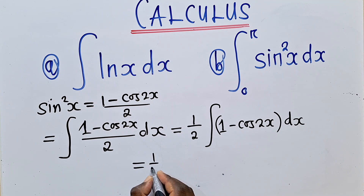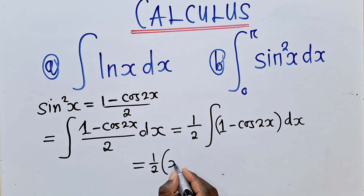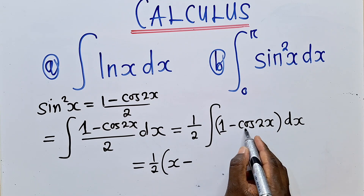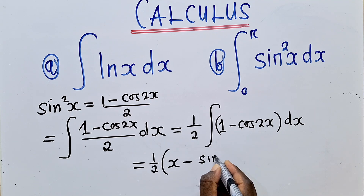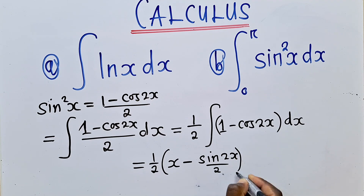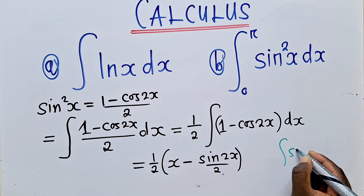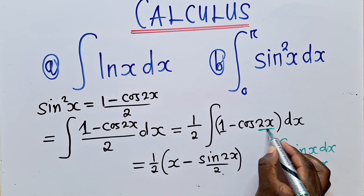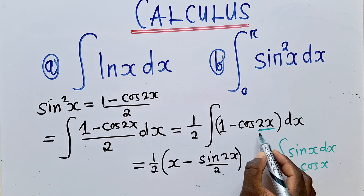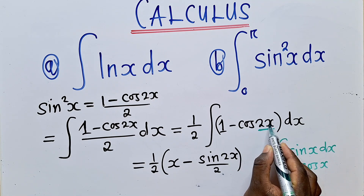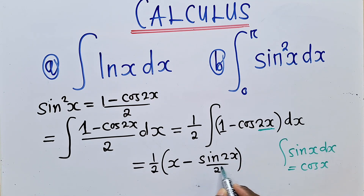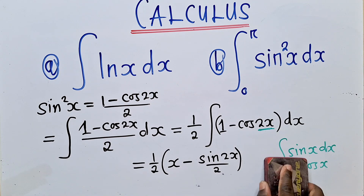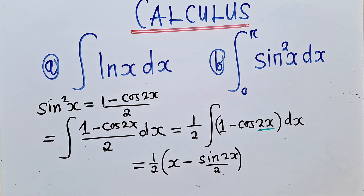From here, we can say equal to 1 over 2 times: the integral of 1 with respect to x is x, minus the integral of cos 2x, which is sin 2x over 2. For those wondering how I found this — the integral of sin x is cos x. Here, since it's a double angle, we find the derivative of 2x, which is 2, and write that as the denominator. So we have 1 over 2 times (x minus sin 2x over 2). We remember to note that there are limits here, so we don't put plus c yet.